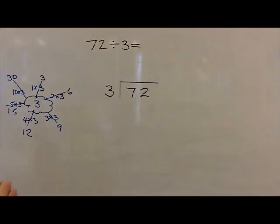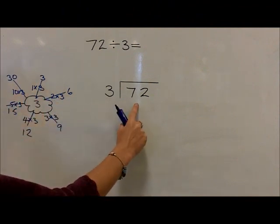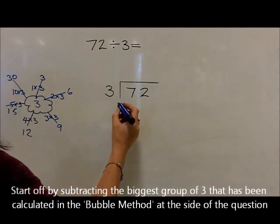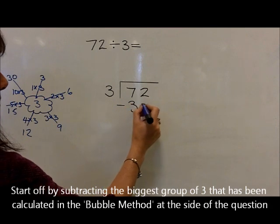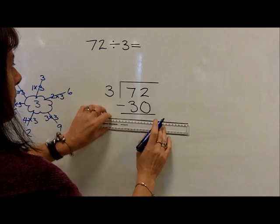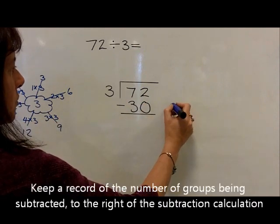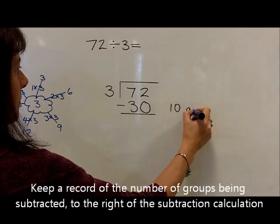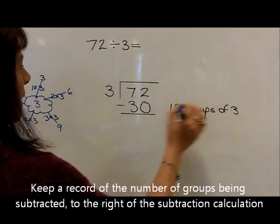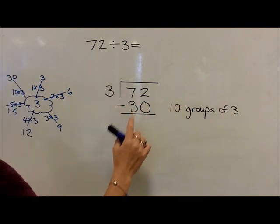We can now use this information to repeatedly subtract groups of 3 from 72. We start off with the fact that 10 groups of 3 are 30, and we're going to subtract those 10 groups of 3 from 72. We record at the side that we're subtracting 10 groups of 3, and then calculate 72 take away 30.